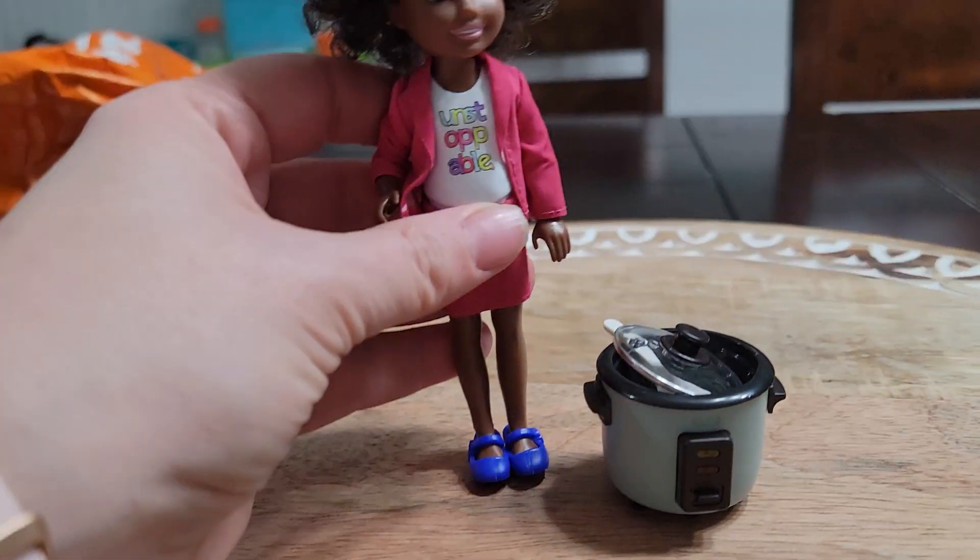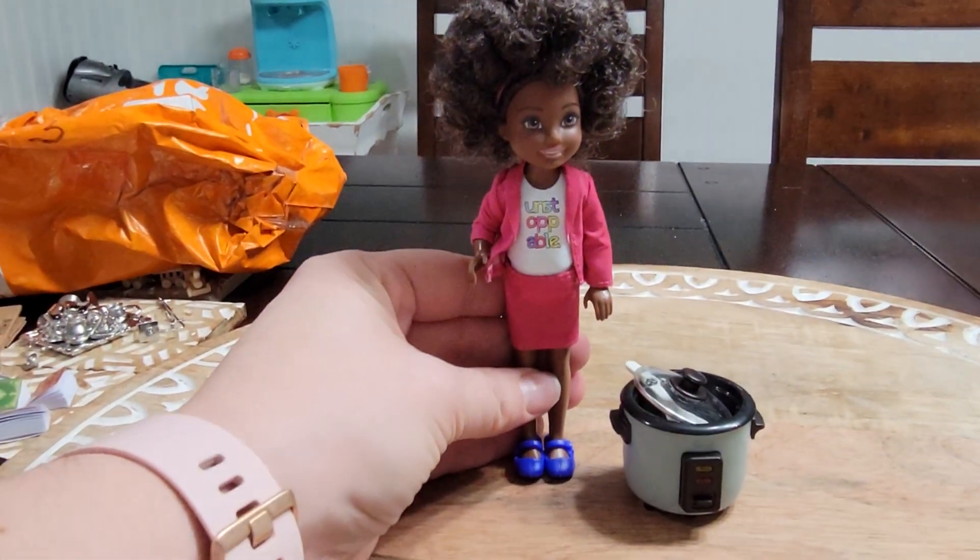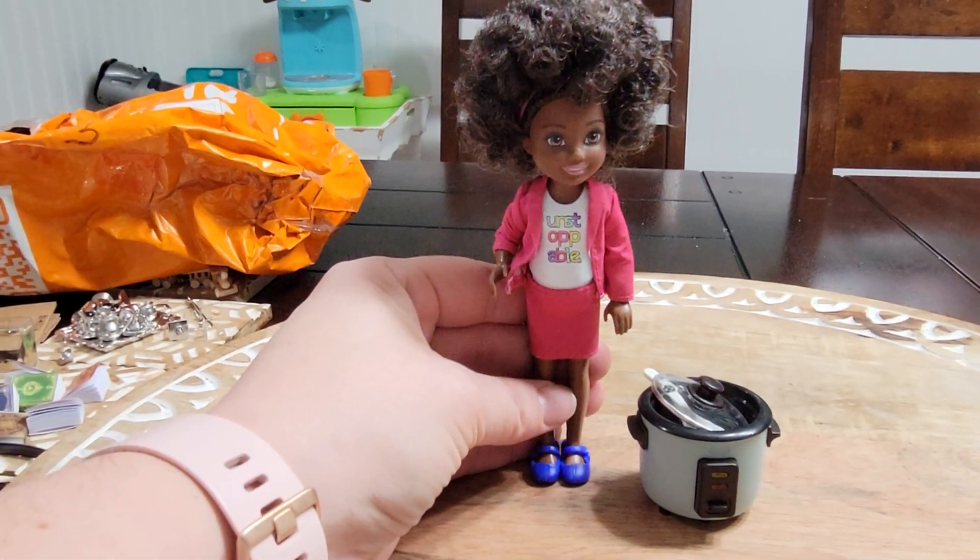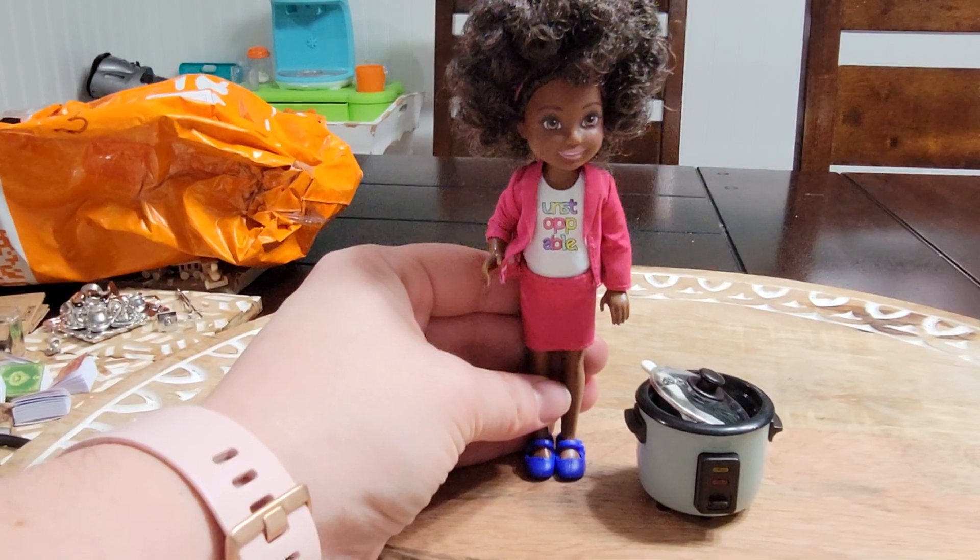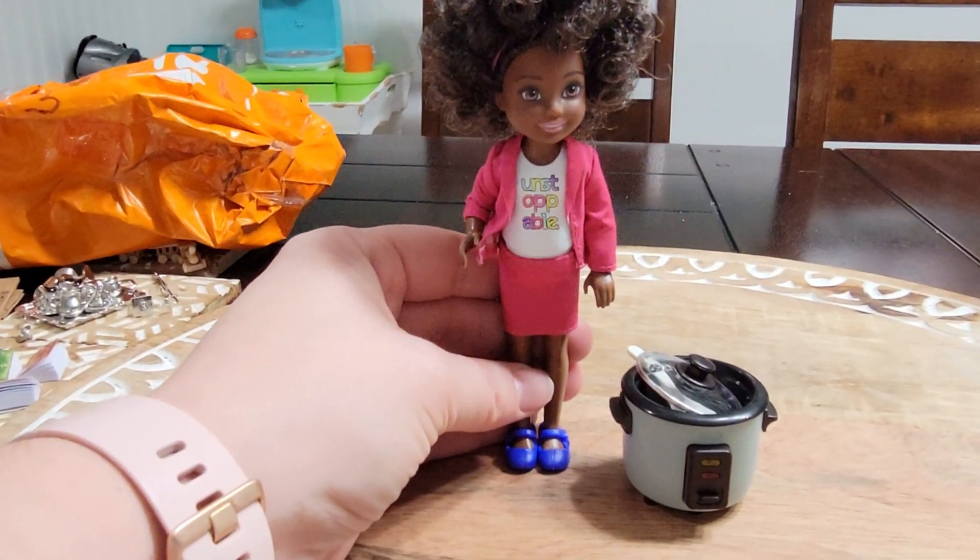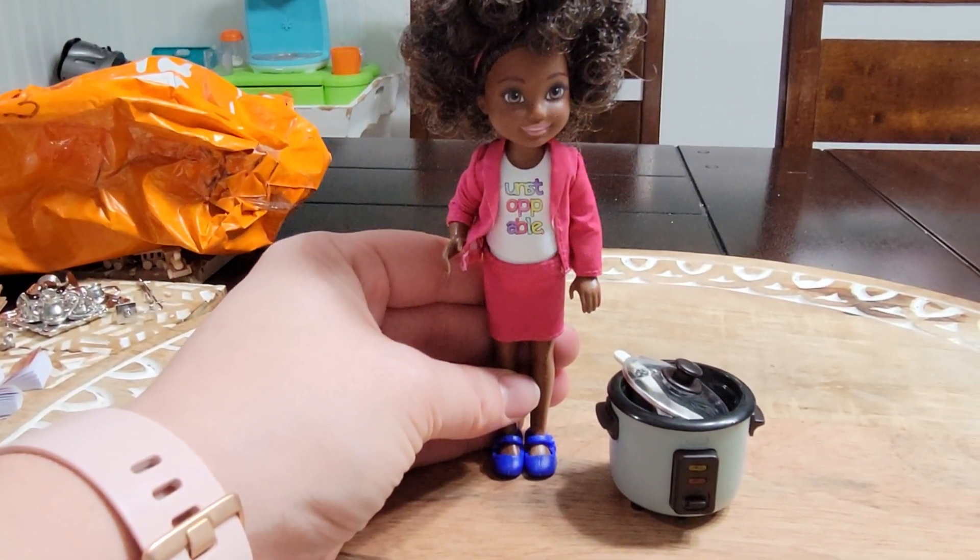It could be used in a 1:12 on the counter. I mean, some crockpots are like huge. So again, some of this stuff is pretty versatile for both sizes.